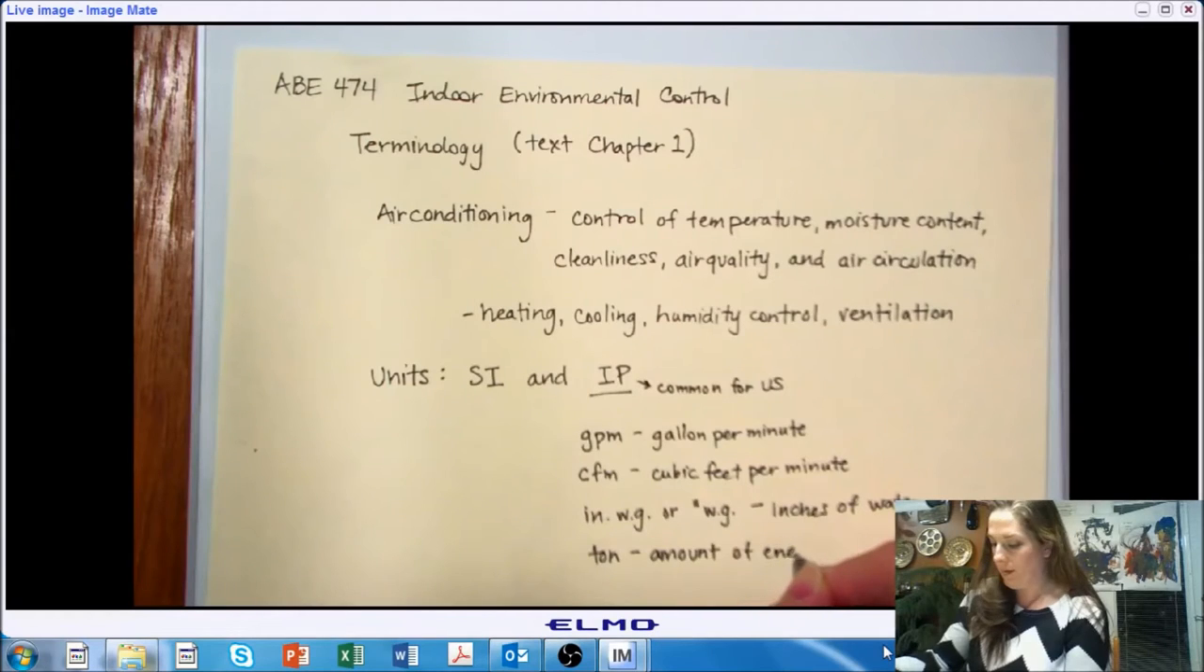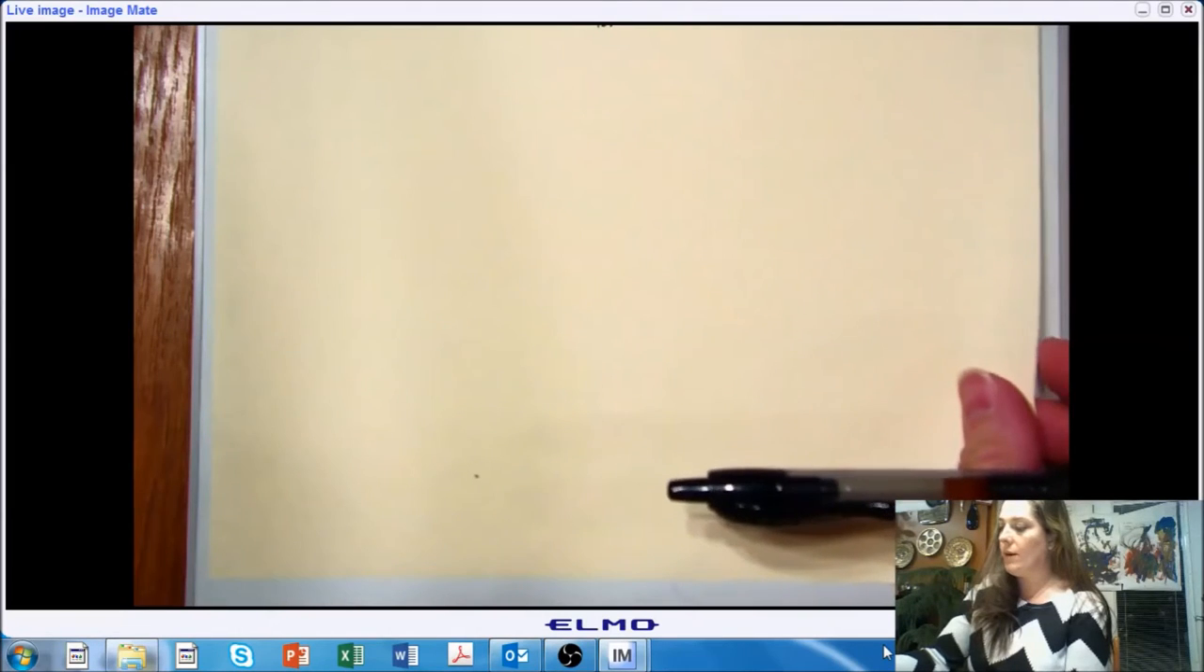And then ton. And this is not a measure of mass or weight. In the application of environmental control, this is a measure of the amount of energy. And frequently we see this paired with a time, so a ton hour. There are a lot of other units we're going to come across. These are introductory things you may not have seen before. So we want to make sure that you've seen them at least once before we run into them and apply them.